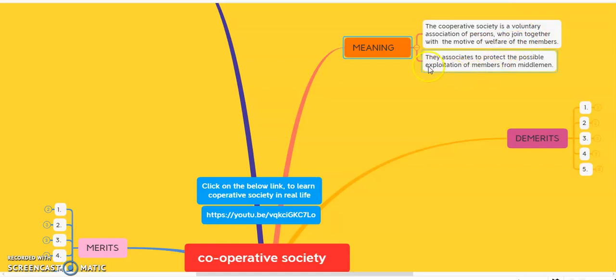Cooperative society always protects its members from middlemen. In a business, various types of middlemen are involved like wholesaler, manufacturer, and retailer. They always exploit the rights of the members of the cooperative society, and the main objective of the cooperative society is to protect its members from middlemen.